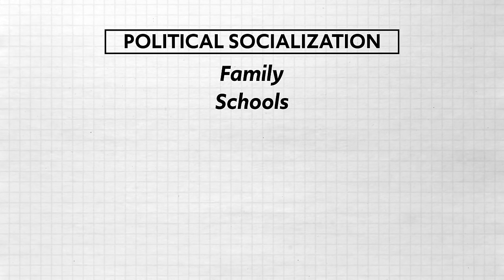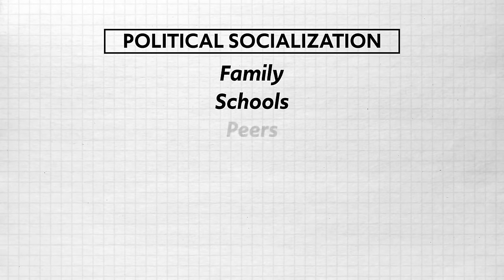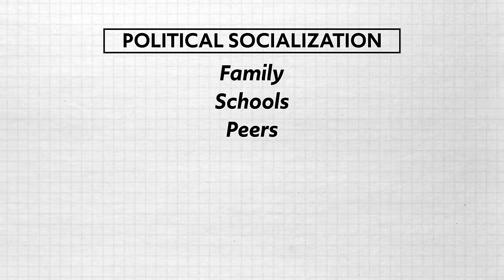A third factor in political socialization is our interaction with peers. Social conformity plays a huge role in what a person believes. If your peers all hold to political ideology X and you hold to political ideology Y, there is a large amount of social pressure — even if indirect — to conform your beliefs to the peer group.